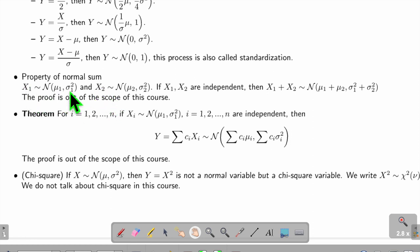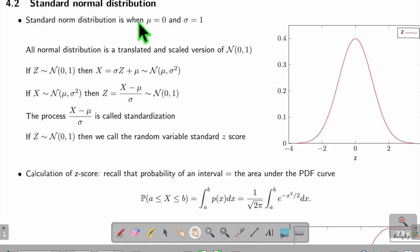If I have two random variables X₁ and X₂ that are both normal and independent, then their sum will also be a normal random variable, and I add their means and add their variances.